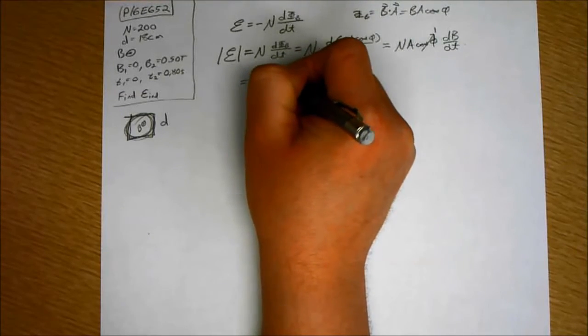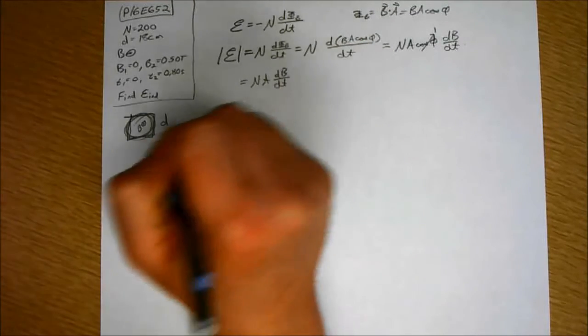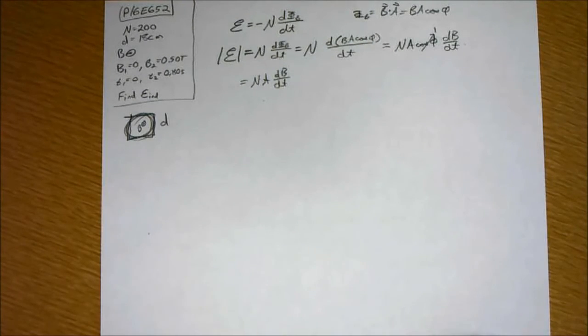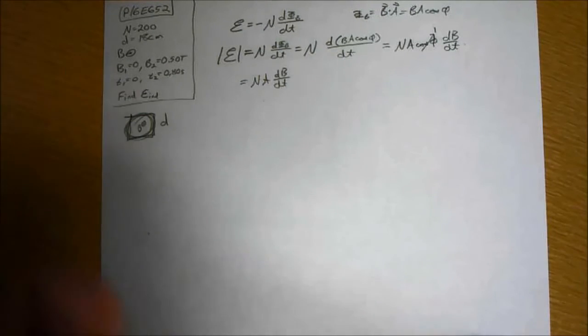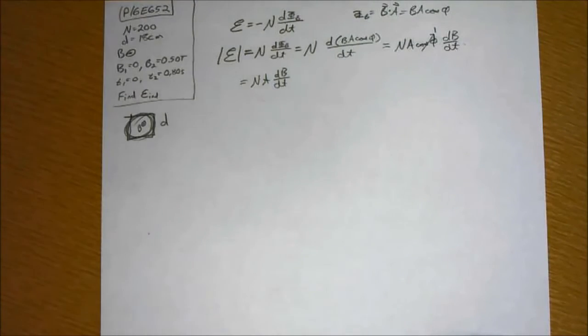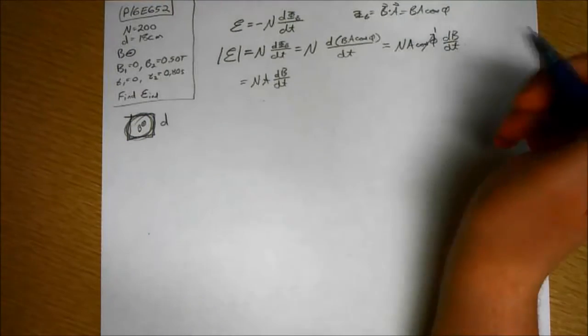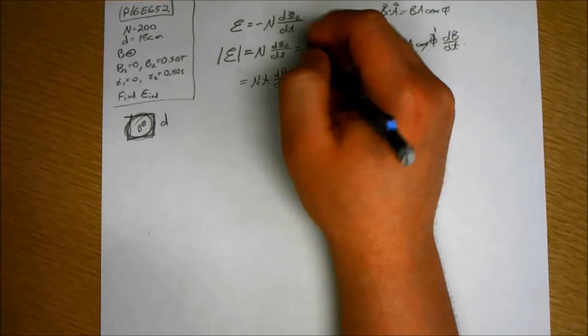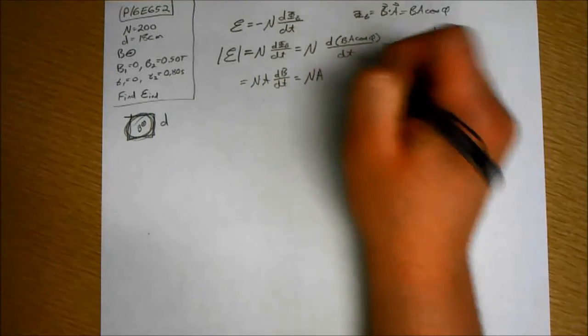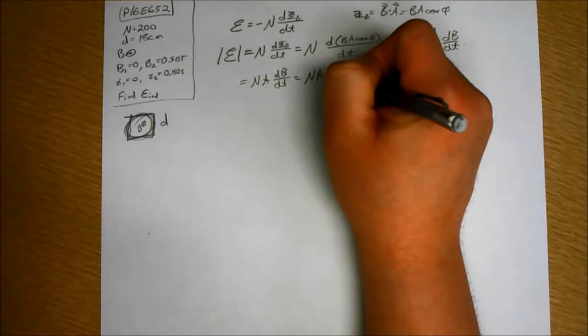So N A dB over dt. Now, how is the magnetic field changing? Is it changing in a constant manner? Yes, actually it says it's changing linearly. The problem states that the magnetic field is changing linearly from one to two. It's changing in a very constant fashion. It's a constant slope, a constant rate of change. Why is that important? Because that means we can now write N A is just the change in B over the change in T. Not dt, excuse me. Delta T.